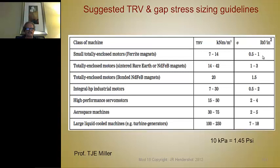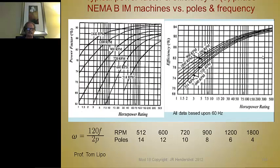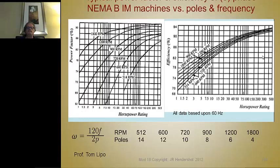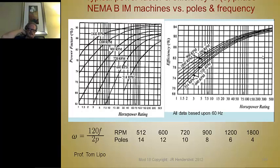Here's the repeated list of suggested torque per rotor volume and gap stress sizing guidelines. You can decide which enclosure you're going to have and shoot for one of these for sizing purposes. Here's also some material developed by Professor Tom Lippo at the University of Wisconsin, which gives expected power factors for different horsepower ratings and number of poles. Number of poles relates to frequency in accordance with the formula shown, and the plot on the right allows you to select goals for efficiency. These are all based on 60 hertz, but still good for comparison purposes.